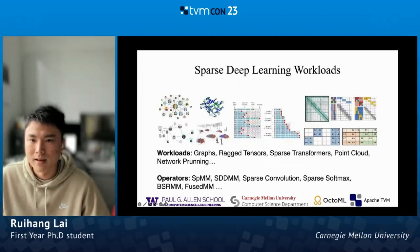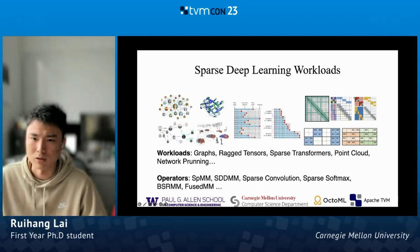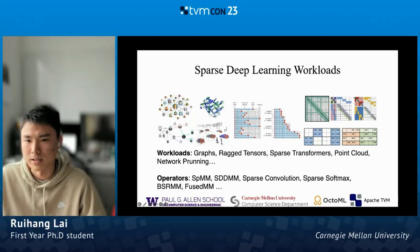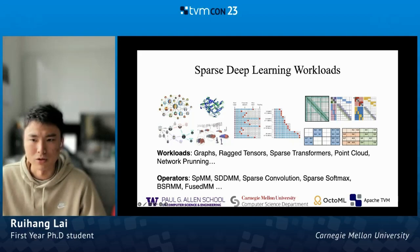Sparsity is becoming ubiquitous in deep learning workloads, such as graph neural networks, ragged tensors, and sparse transformers. There has been an increasing demand for high-performance sparse operators, notably SpMM, SDDMM, and some block sparse operators. Though significant work has been done to accelerate normal deep learning workloads, the tool chains for sparse deep learning are still primitive and hard to generalize.